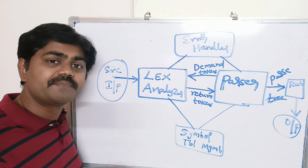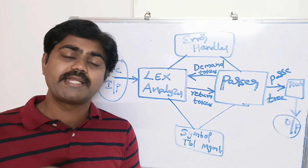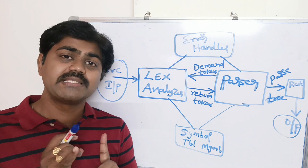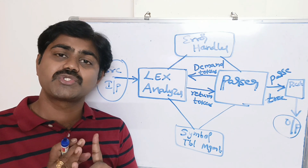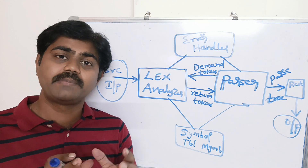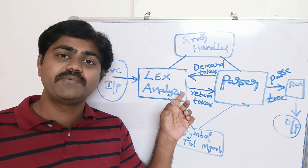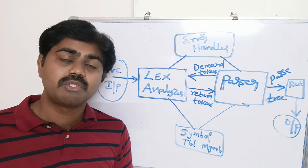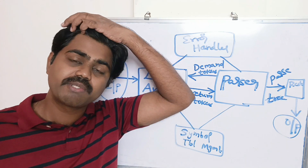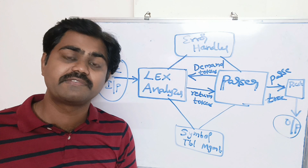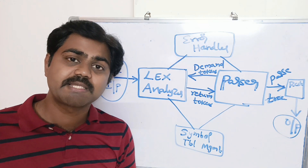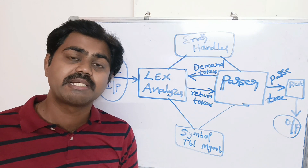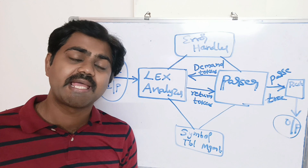In this video we explained the role of a lexical analyzer, its different functions, and the definitions of lexeme, pattern, and token. We saw an example grouping these into a table, and we looked at the functionality of a lexical analyzer and how it divides source input into tokens. I hope you understood today's topic. If you're watching our channel for the first time, please subscribe, share our videos with your friends, and support our channel. Thank you very much and have a wonderful day.